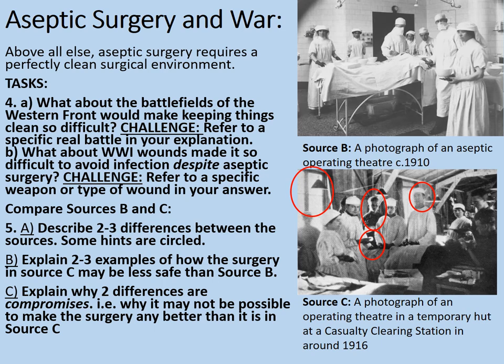Two to three examples of how surgery in Source C may be less safe than Source B: the overcrowding would make it more likely that infections could spread from people into the patient. Not everyone in the room is wearing sterile equipment. None of the staff in Source C are wearing face masks to help prevent infections, although some are at least wearing headdresses.